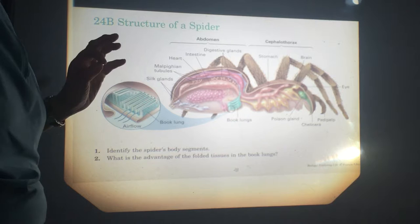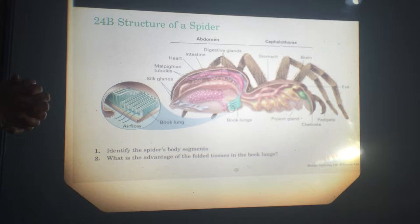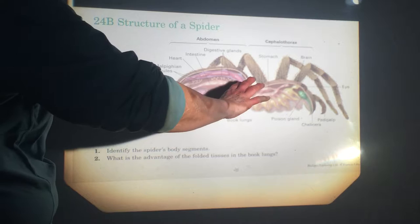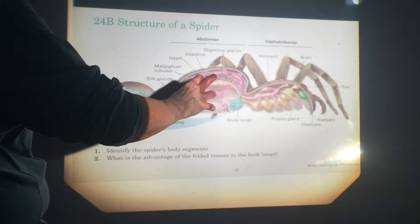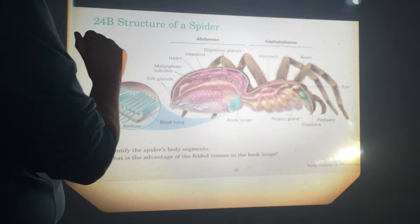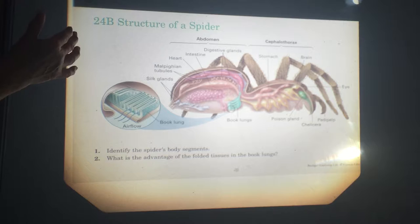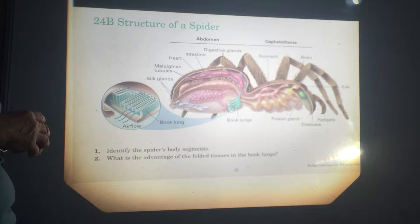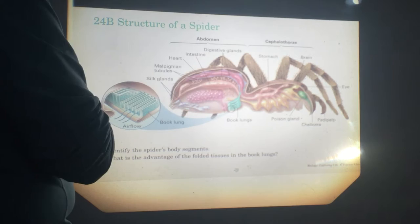Dr. Martin here, just one last little video clip on the body structure of a spider, which is an arachnid. Remember we talked about the fact that there are two major body parts — all segments have coalesced into two regions: the cephalothorax, where the head and what would be the thorax in an insect have combined, and the abdomen as the second body part. You can see the four pairs of legs here.